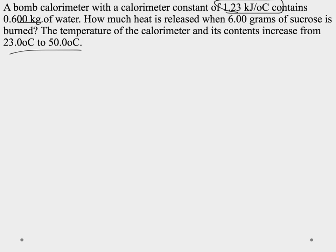So what I want to do is first let's just label what we have. So we have the calorimeter constant, C_cal, 1.23 kilojoules per degree Celsius.